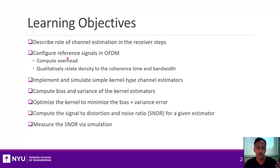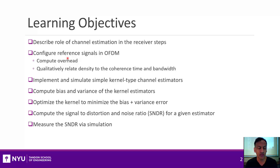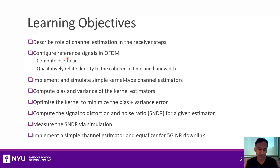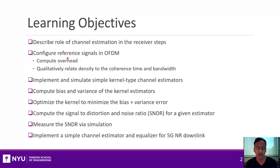Next we're going to look at how to actually measure the performance. A lot of people just design channel estimators and then don't really go through the process of rigorously testing them to understand their performance properly. I'm going to give you some simple tools that you can use to measure the performance in the lab or in simulation. Finally, by the end of this unit, you will actually be able to build a simple channel estimator, at least for a single antenna system in a 5G New Radio downlink. It should perform close to what you would have gotten with a perfect channel estimate, and you'll be able to see the differences.